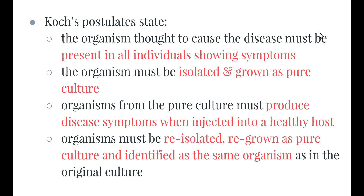Koch's postulates state four criteria. First, the organism thought to cause the disease — whether a bacteria or virus — must be present in all individuals showing symptoms. For example, if 57 people were showing symptoms of anthrax and you took their blood, all 57 must have the anthrax bacterium present.